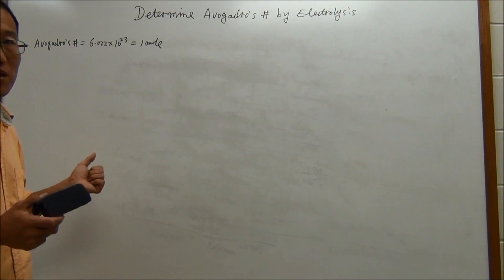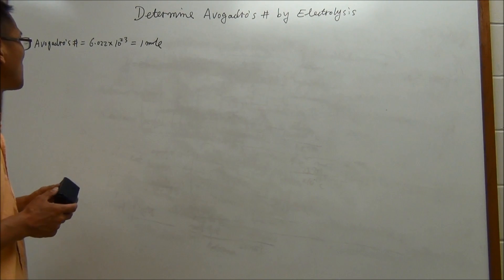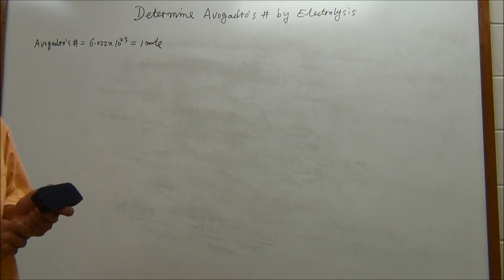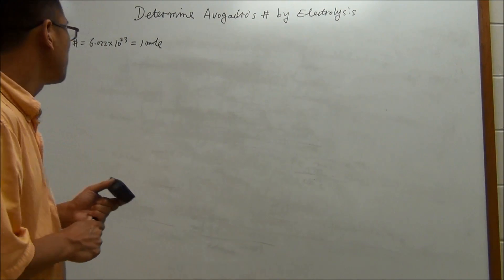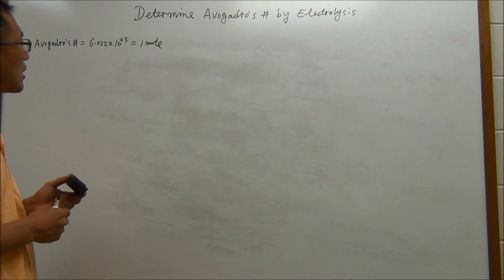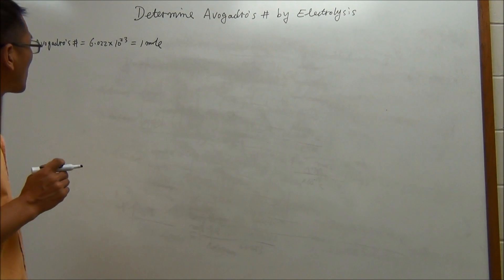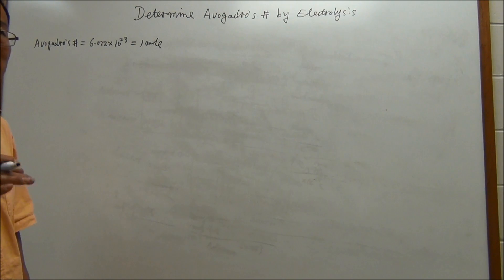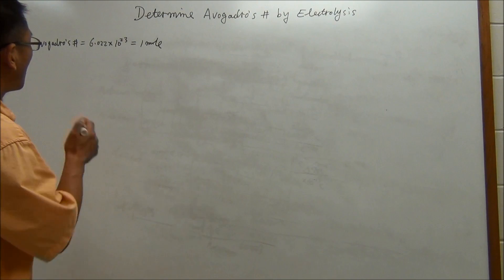First, let's review what Avogadro's number is. In class, I told you that one mole equals Avogadro's number, or in other words, one mole equals 6.022 times 10 to the 23rd power. Avogadro's number is just a number.